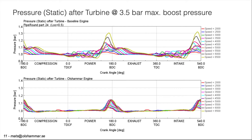The static pressure after the turbine at 3.5 bar absolute pressure: for the baseline engine there is a lot of flutter and we have 1.3 bar as the peak pressure. Whereas for the Olsammar engine we have a lot less flutter and the peak is a lot lower as well. This means we have a much smoother flow after the turbine, which makes it much easier for the catalytic converter and the muffler to handle the flow. We get less back pressure from those parts, and it is possible to have a smaller catalytic converter or smaller muffler to do the same job.